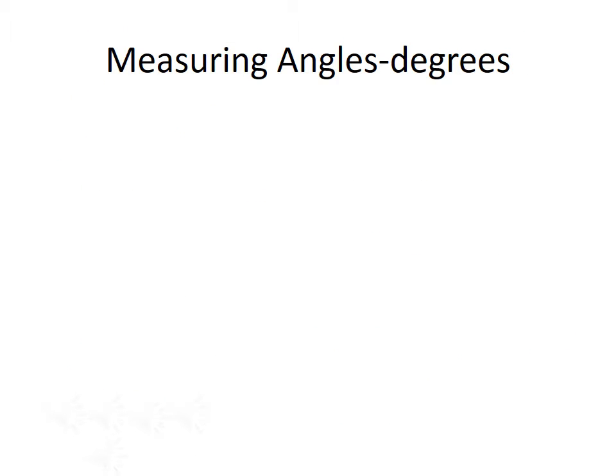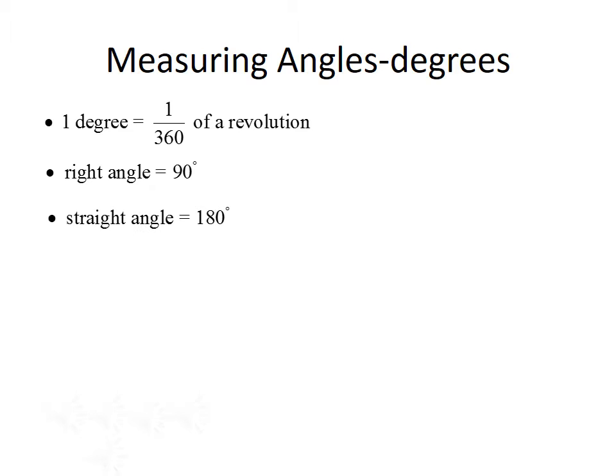The first way that we have to measure angles is using the unit of degrees. One degree is equal to one three-hundred-sixtieth of a revolution, so that means there are 360 degrees in one complete revolution. Remember from geometry that a right angle measures 90 degrees, and a straight angle equals 180 degrees.